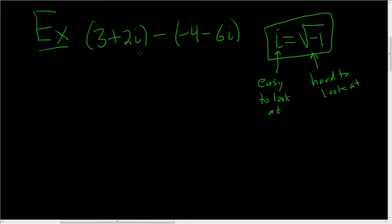So this is a subtraction problem. What we'll do is just simplify. There's a 1 here, but you don't have to write it, so you can just drop the parentheses in this first piece. So it's 3 plus 2i.